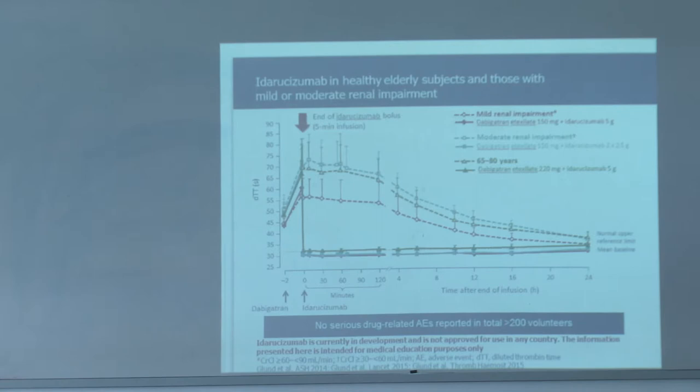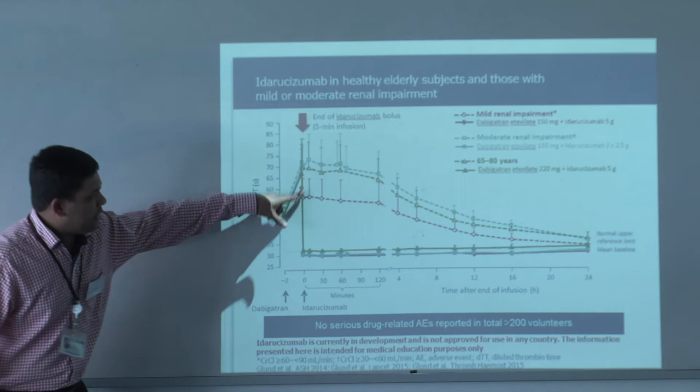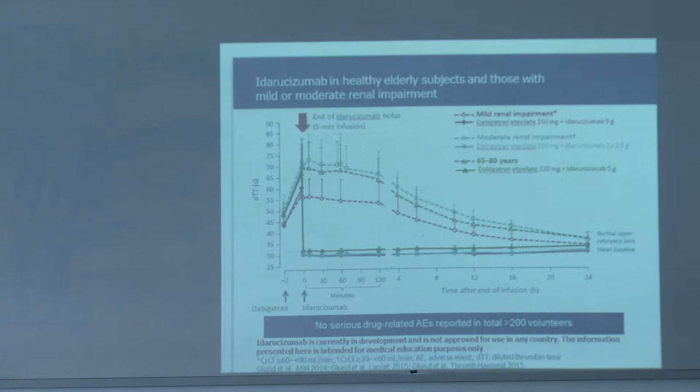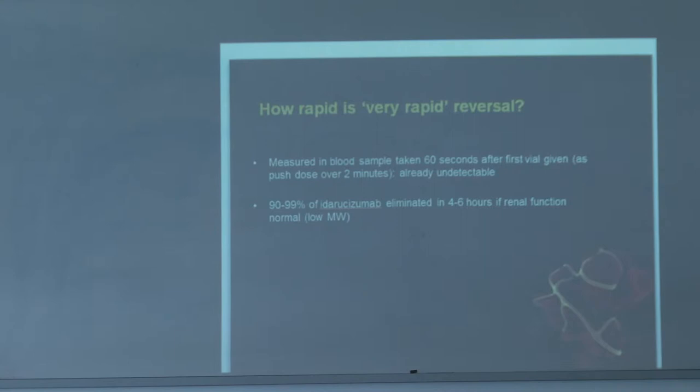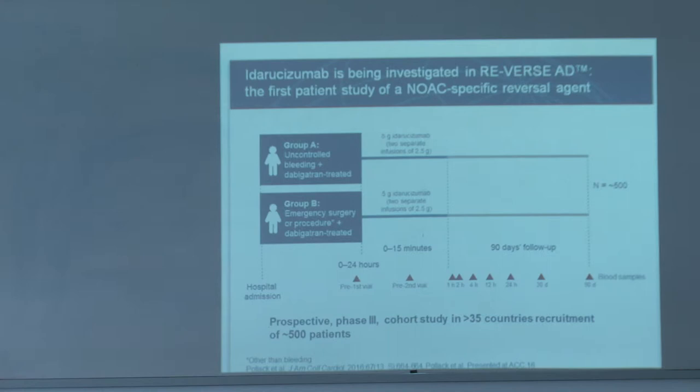This shows the effect of Praxbind in patients with renal impairment — it works even in those patients, and it works in elderly patients. If you don't give anything, the Dabigatran level slowly drops to normal levels. The reversal with Praxbind is very rapid, as you can see.